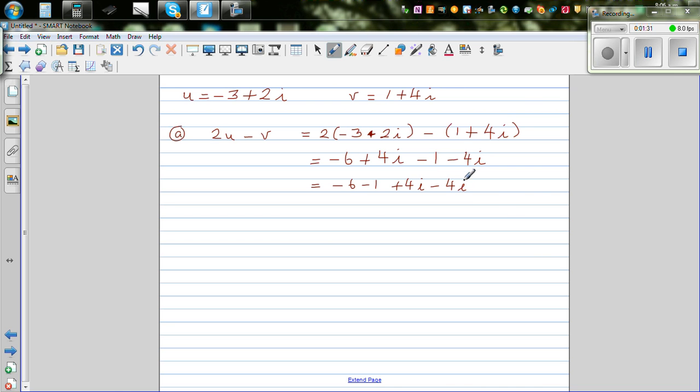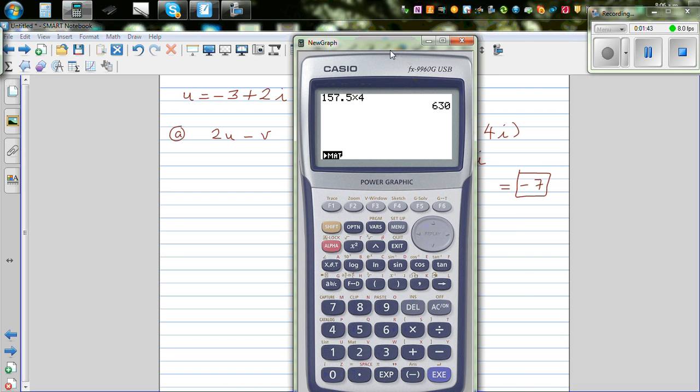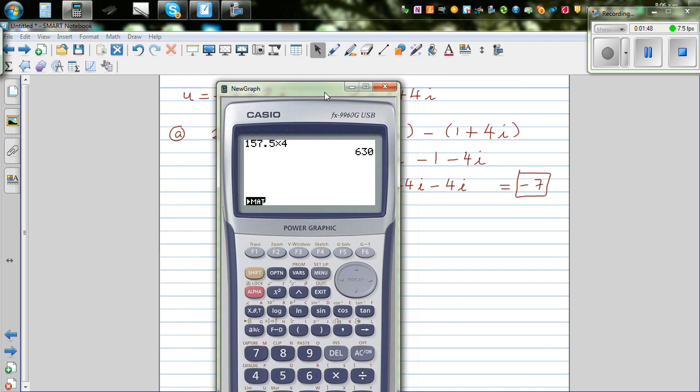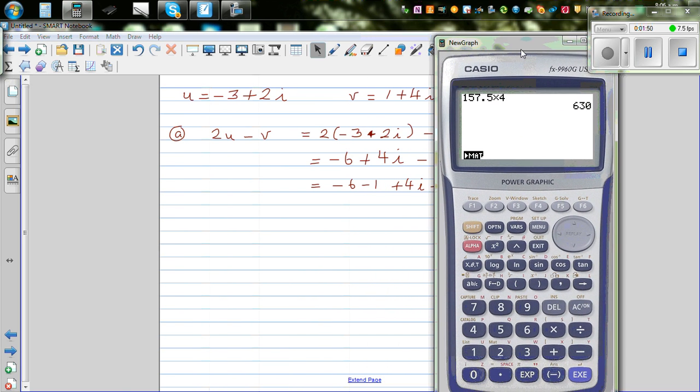You can do this using vectors. Finally your answer is minus 7. This is a simple manipulation of complex numbers. Let's do this on a calculator.